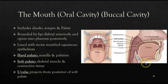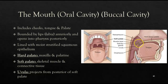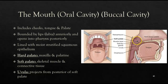A sagittal view shows the hard palate, again made of the maxilla and palatine bone, the soft palate, and the uvula hanging back — it can swing up and block the nasopharynx.